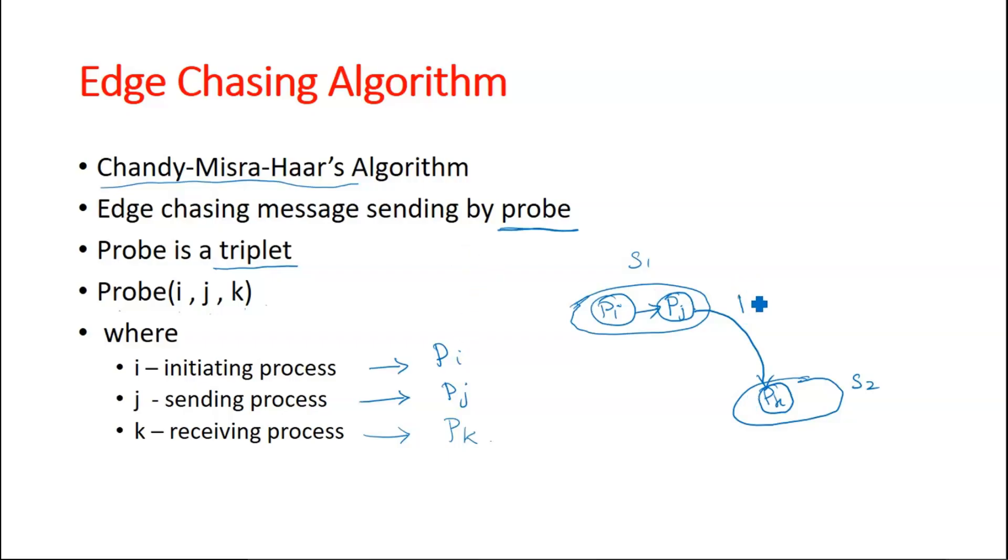Now probe can be written as here. Because the initiating, there is a dependency starts from pi. So this is what the ith site. So i comma j, j is the sending, the probe is sending site at site one, sorry, process at site one.